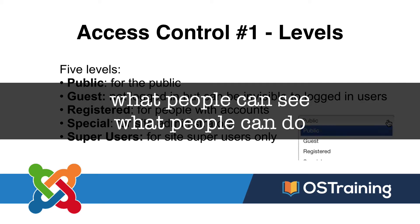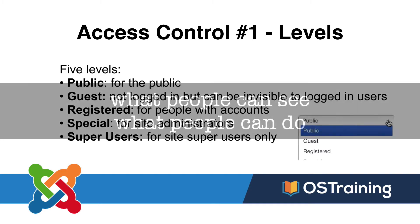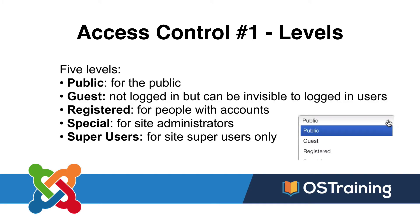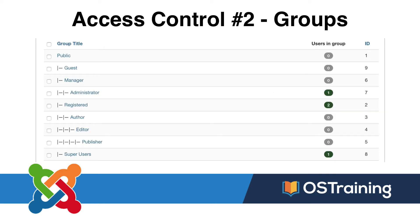Simply put, access control in Joomla controls what people can see and what people can do. There are five levels: public, guest, registered, special, and super users. Public users are on your site and not logged in. Guests are also not logged in, but exist so you can hide some content from registered users but not from guests.